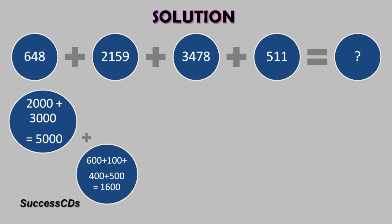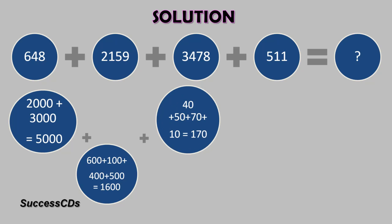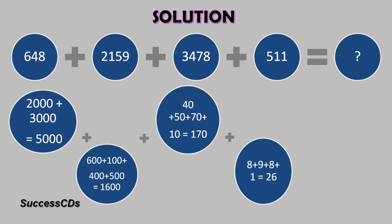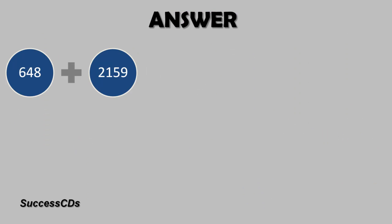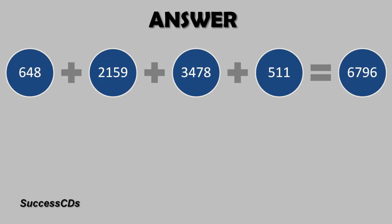You have 600, 100, 400, and 500, which total to 1600. After that, go to the tens place numbers: 40 plus 50 plus 70 plus 10 gives you 170. And then the ones place numbers — 8 plus 9 plus 8 plus 1 gives you 26. So you add up these four numbers and you will get the answer as 6796.